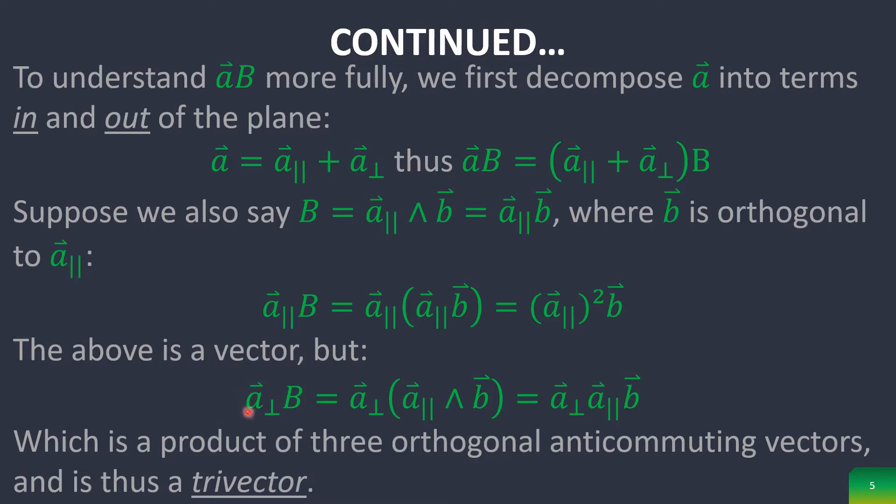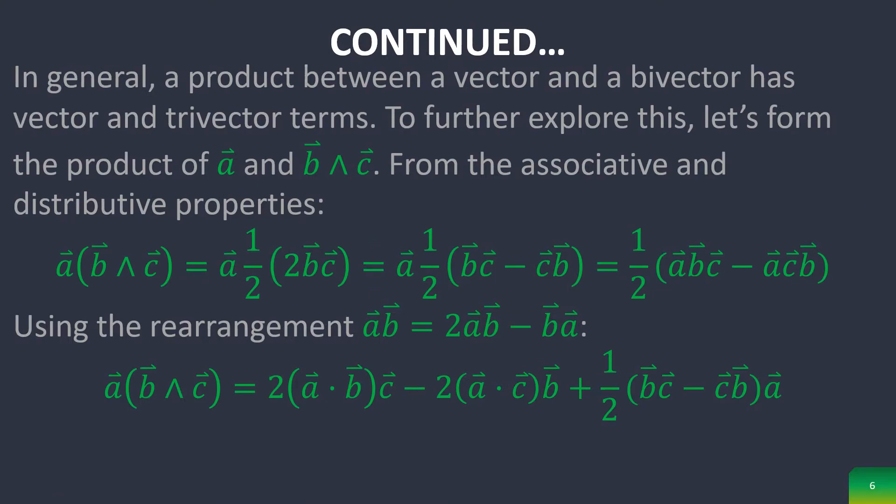And when you multiply it by the perpendicular component, you get a trivector. So in general, a product between a vector and a bivector has vector and trivector terms.